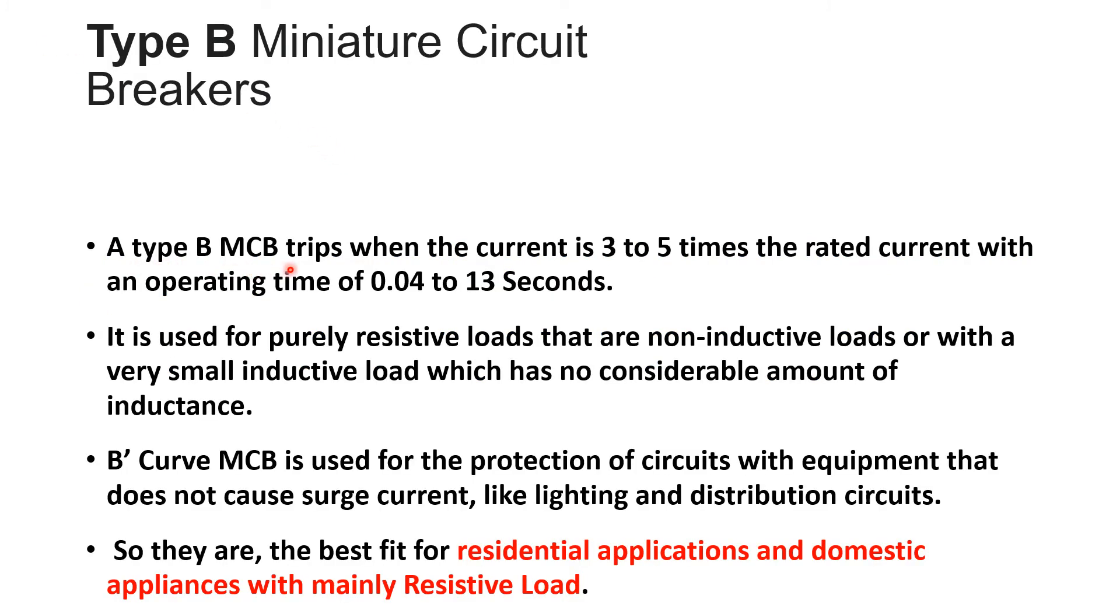A type B MCB trips when the current is 3 to 5 times the rated current with an operating time of 0.04 to 13 seconds. So what we are going to see in our experiment we are going to check the same thing as our MCB of rating 6 ampere. It is B type characteristic. So this particular MCB whenever current reaches 3 times to 5 times of its rated value, so 3 times means 18 ampere to 30 ampere in that range, then that particular MCB will trip within 0.04 to 13 seconds. So if it operates within this period it means your B curve MCB is okay.